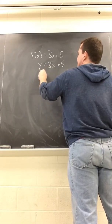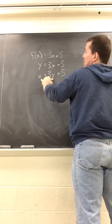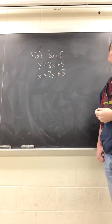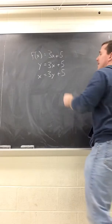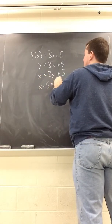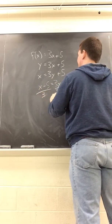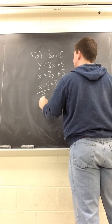It becomes x equals 3y plus 5. Literally just flip your x's and your y's. Now solve this for y. Subtract the 5, so you get x minus 5 equals 3y. Divide by 3, and you get y equals x minus 5 over 3. That's your inverse.